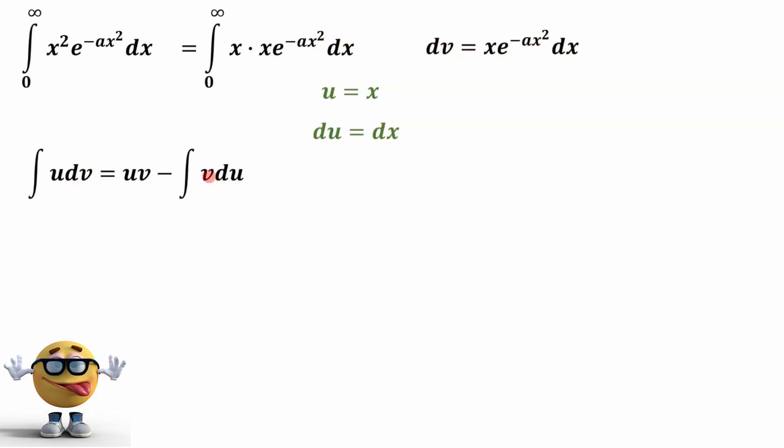Now we need to know what v is, so we need to integrate this. To do that, we're going to do a substitution. Usually we call it a u substitution, but we already use the letter u, so I'm going to use the letter n. We'll set n equal to negative ax squared,